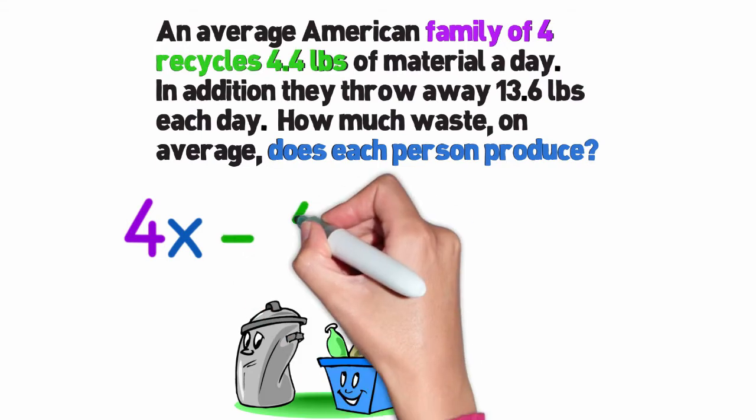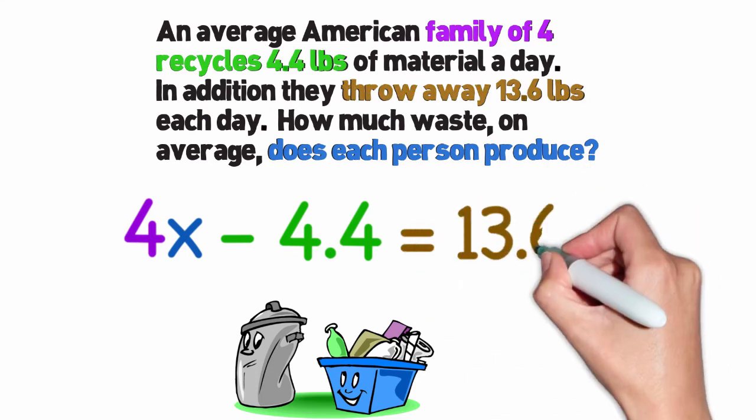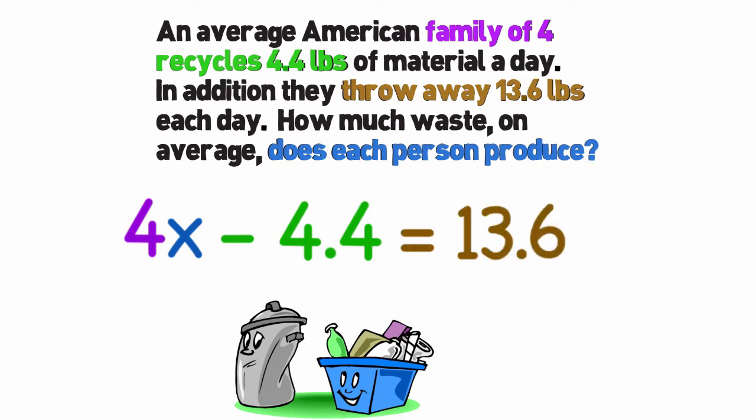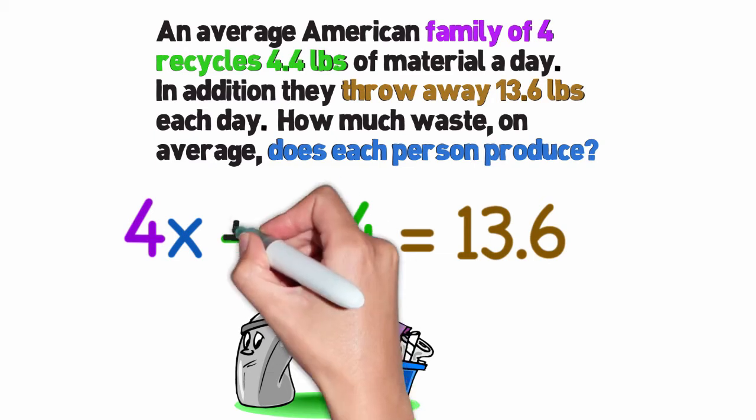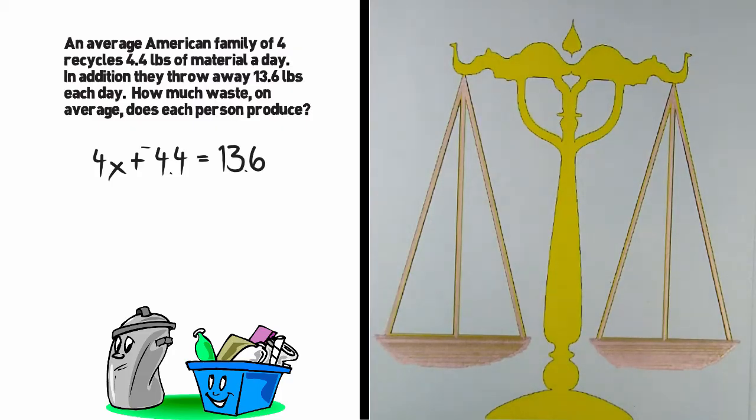So we would subtract 4.4 pounds and then that total should equal 13.6 pounds. That is the amount of trash that we actually throw in the trash can. A couple of things we need to notice here. We have a subtraction problem. Traditionally, what we do is rewrite that problem as an addition problem since we know that subtraction is the same thing as adding the opposite.